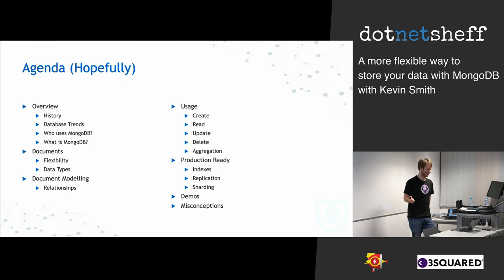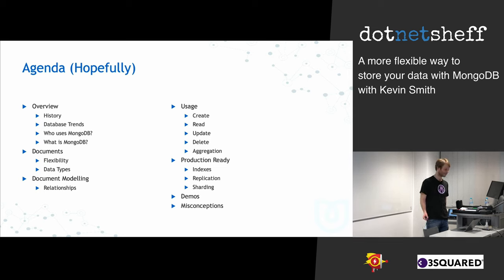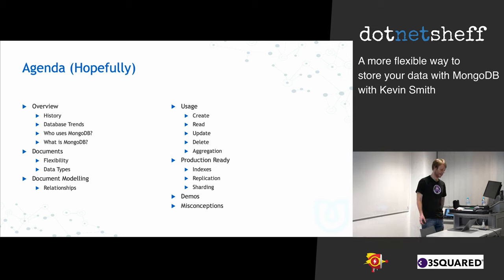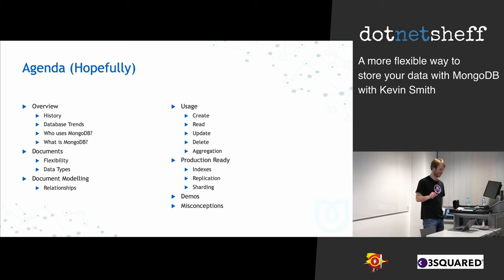The aim of today is to get through quite a bit. We're going to go over a brief history of MongoDB and how it came about, the current database trends including different types of databases, who uses MongoDB, the flexible document structure, how to model documents and relationships between documents, basic CRUD operations, how it's made production ready, some CRUD demos, and misconceptions about MongoDB.